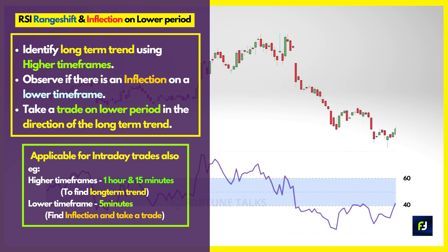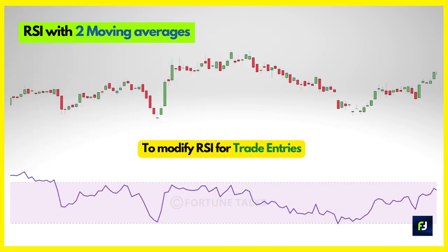The idea is to find the overall market trend over two larger time frames. If the two larger-period RSIs signal a particular trend and the RSI on the lower time frame forms an inflection point, it is a good indication of a trade opportunity. For intraday purposes, use one-hour and 15-minute RSI as higher time frames and five-minute for the inflection point entry.